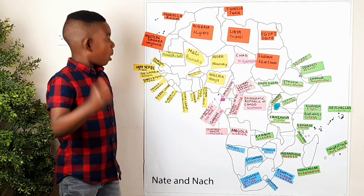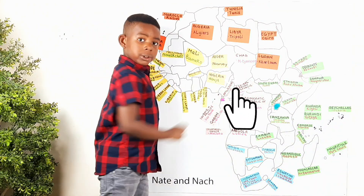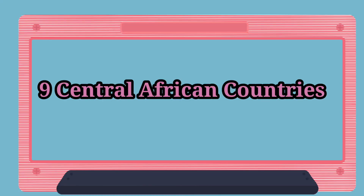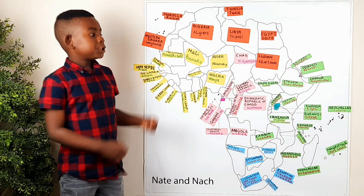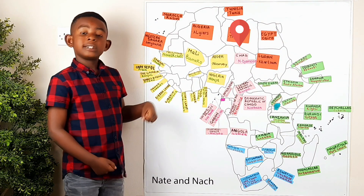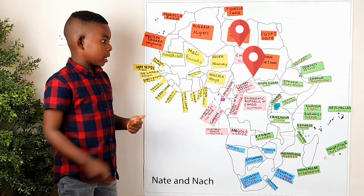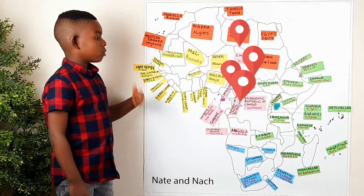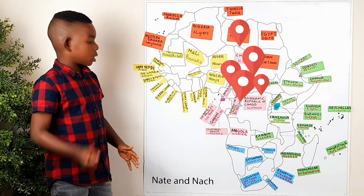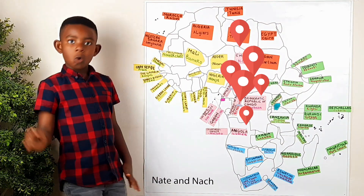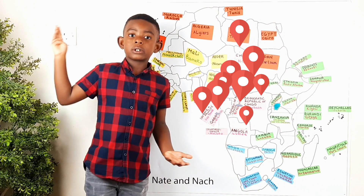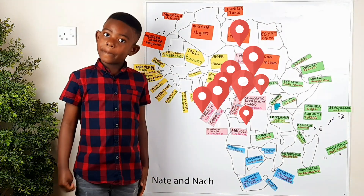Let's go on to Central Africa. Central Africa has nine countries and I'm going to name them: Chad, Central African Republic, Cameroon, Republic of the Congo, Democratic Republic of the Congo, Angola, Equatorial Guinea, Gabon, and São Tomé and Príncipe.